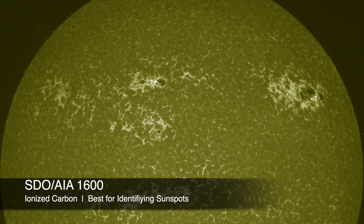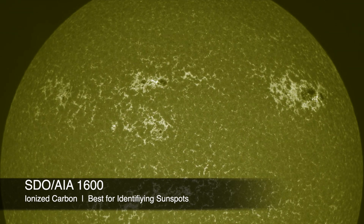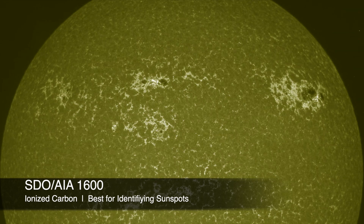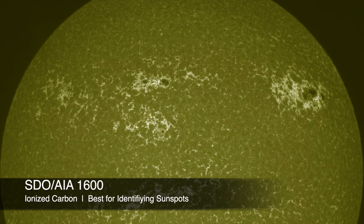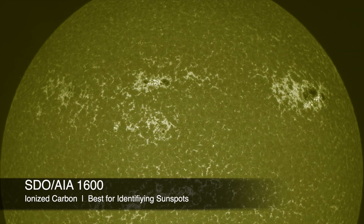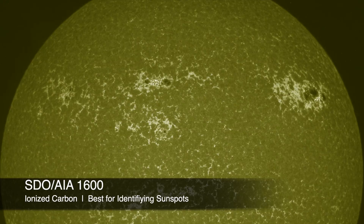Back down at the surface, ionized carbon is seen in 1600 angstroms, and this is obviously showing the sunspots themselves very well, as well as their peripheral magnetic activity around them.